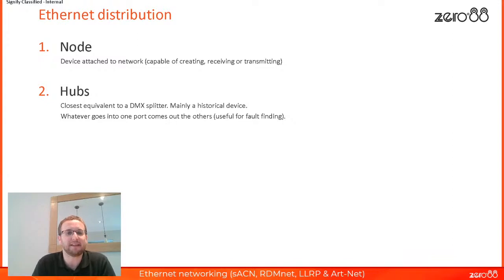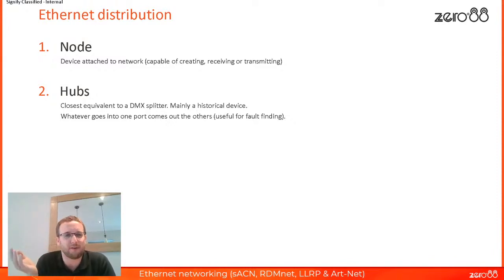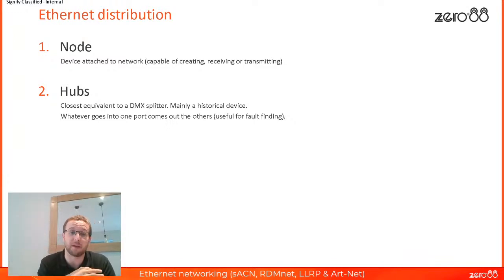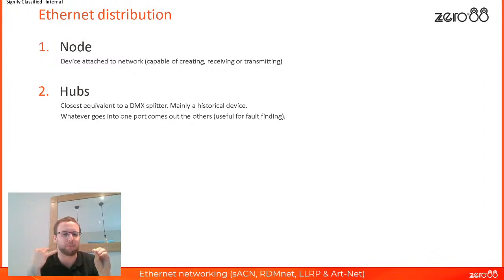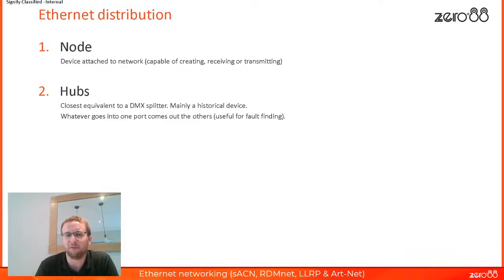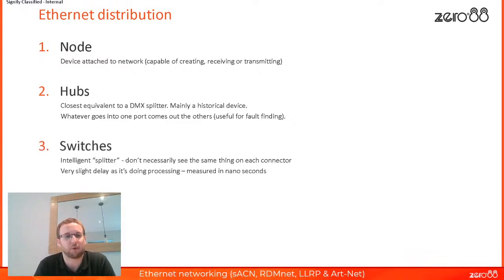A hub is a type of node. It lives on the Ethernet network and is the closest equivalent we have to a DMX splitter. It has lots of ports and you plug your Ethernet cables into it — whatever data you put into one hole comes out all the other holes. A hub is pretty historical though — they've mostly been replaced by what's called a switch.